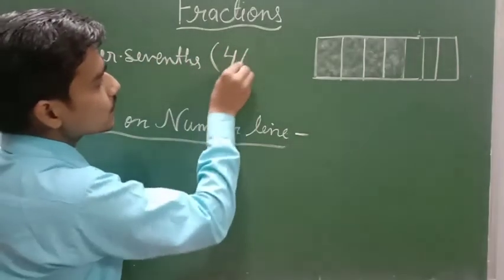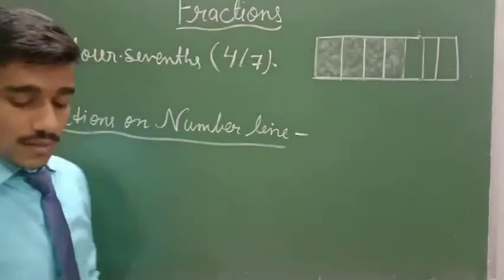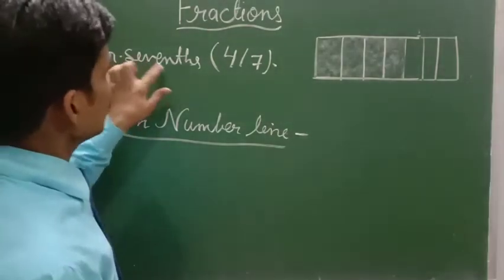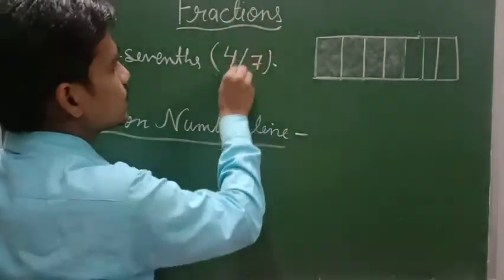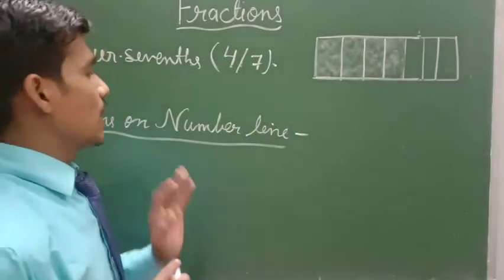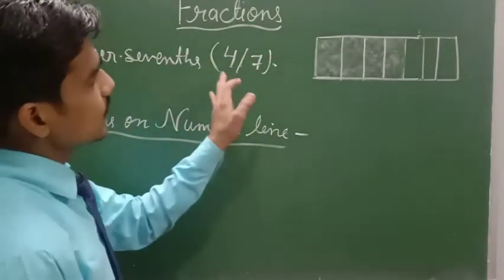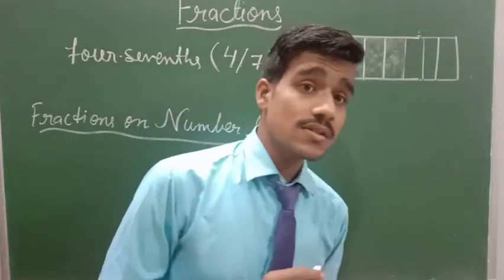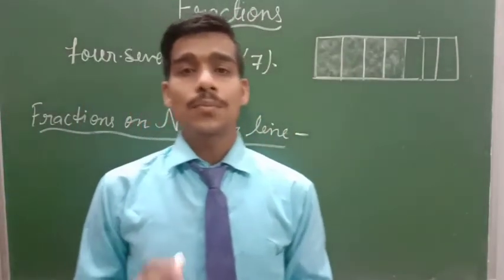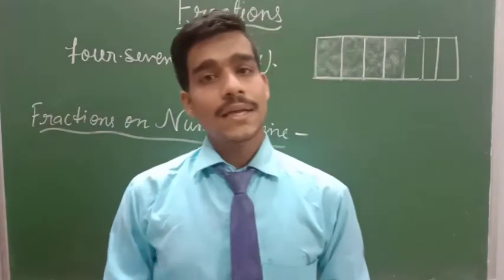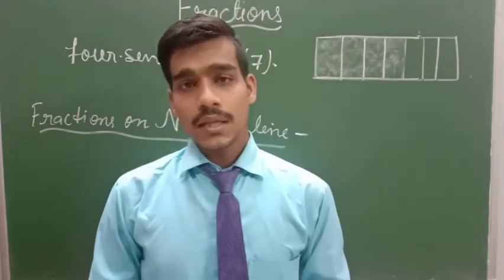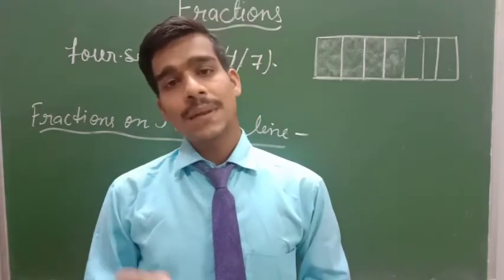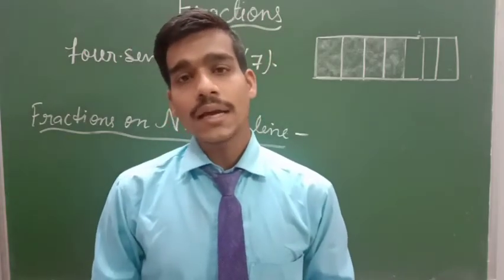4/7 - it is just like 4 by 7. And this is the fraction form. What is the fractions? The number of the form P by Q, where P and Q are called integers.